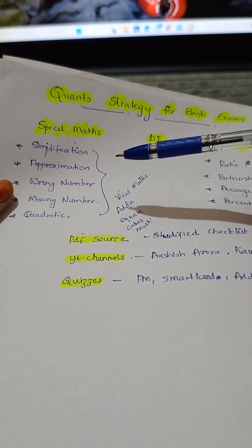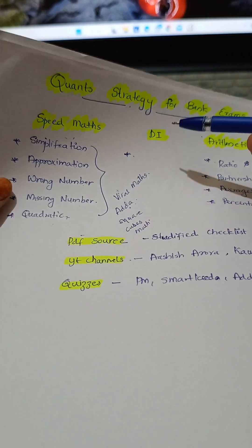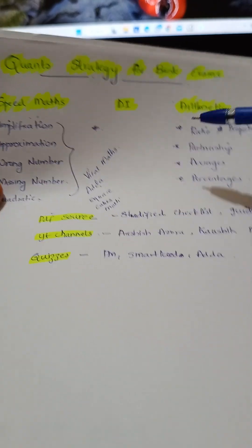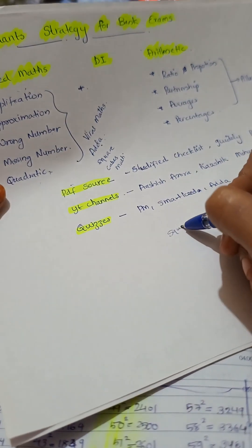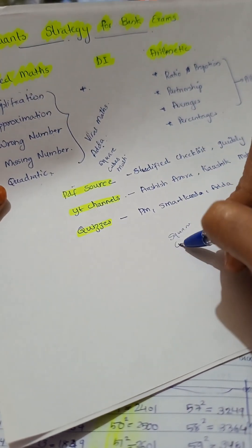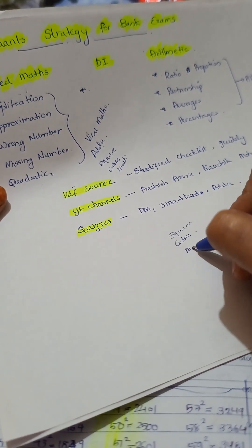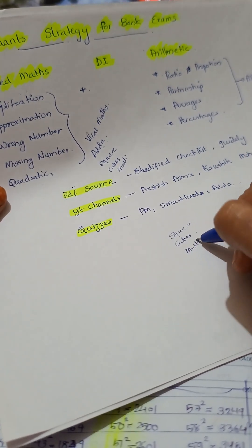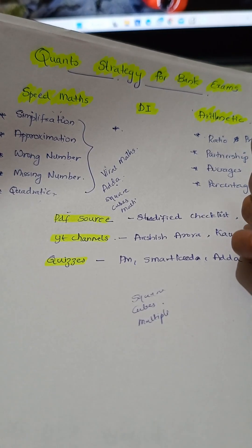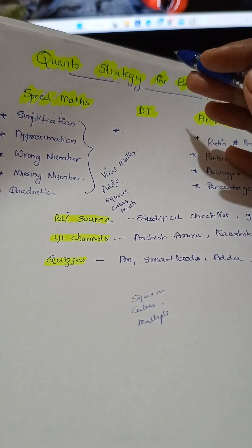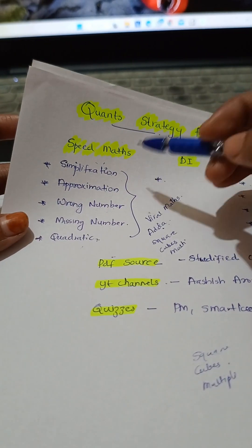For improving your speed, you should also know squares, cubes, and multiplication tables. Revise them regularly so you don't forget. That's all about Speedmax.